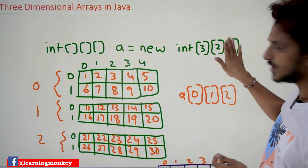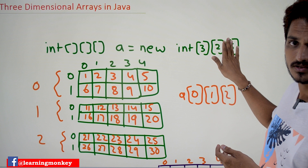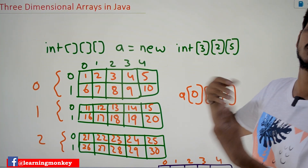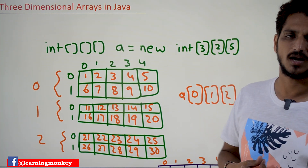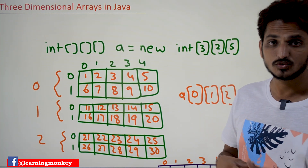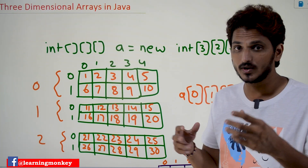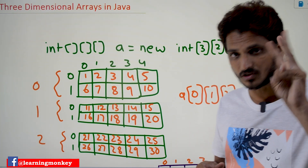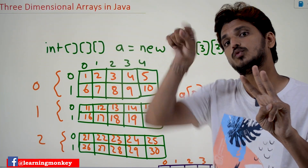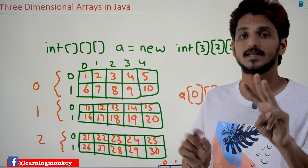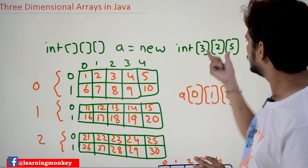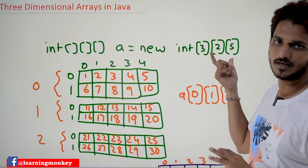Like this two-dimensional array, we need three of them. That is what a three-dimensional array is — we need three two-dimensional arrays.